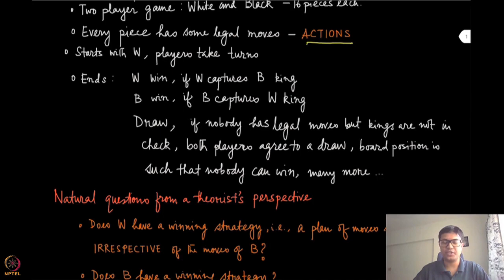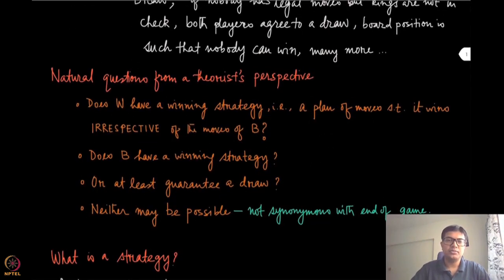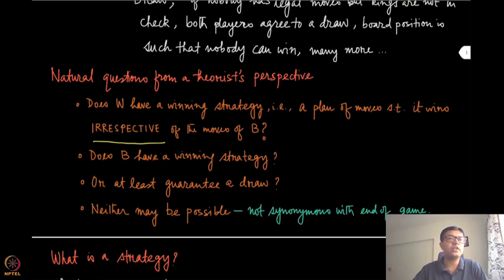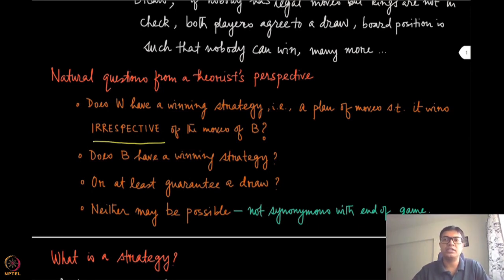From a game-theoretic point of view, we ask: does the white player have a winning strategy? A winning strategy is a plan — a sequence of actions — such that white wins irrespective of the moves of black. So player W wins no matter whatever action black picks. Similarly, you can define the black player's winning strategy. Or do they have a strategy where they can at least guarantee a draw? You can contrast this with smaller sequential games like tic-tac-toe, where you know how to ensure a draw — you may not ensure a winning strategy, but you can at least guarantee a draw.